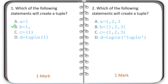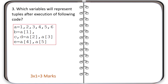The correct options for question two are A, C, and D. Option B will create a list, while the statements given in options A, C, and D will create tuples.